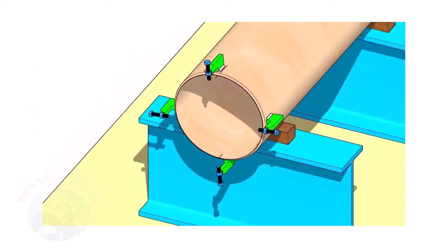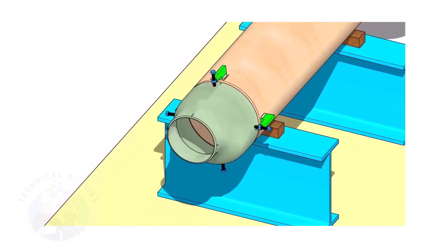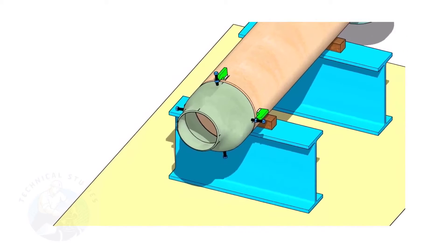If you don't have a pipe aligning clamp, tack weld four jack bolts 90 degrees apart as shown. Put the reducer in the clamps. Slightly tighten the bolts.